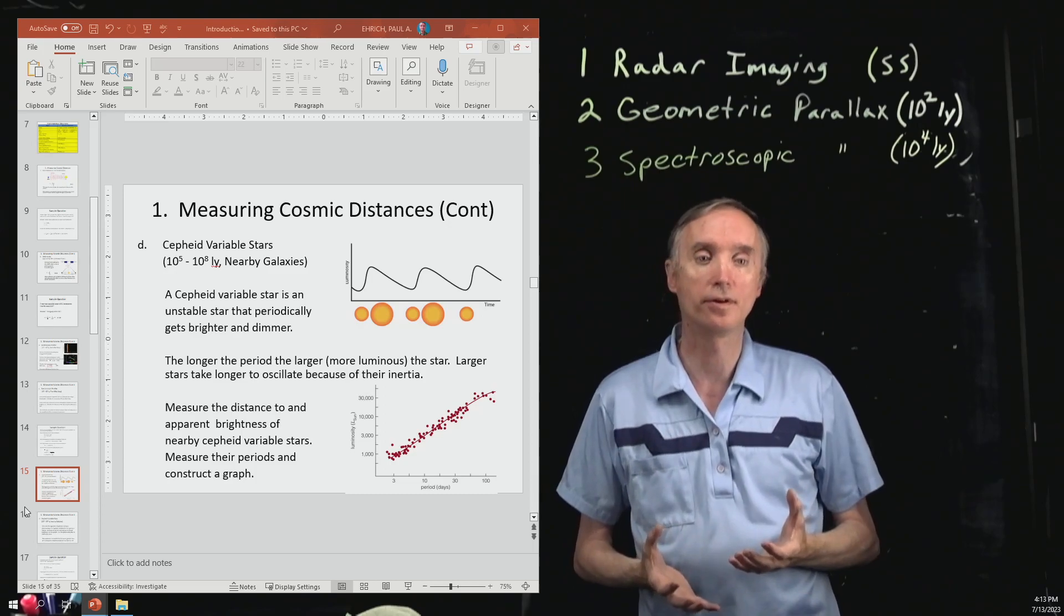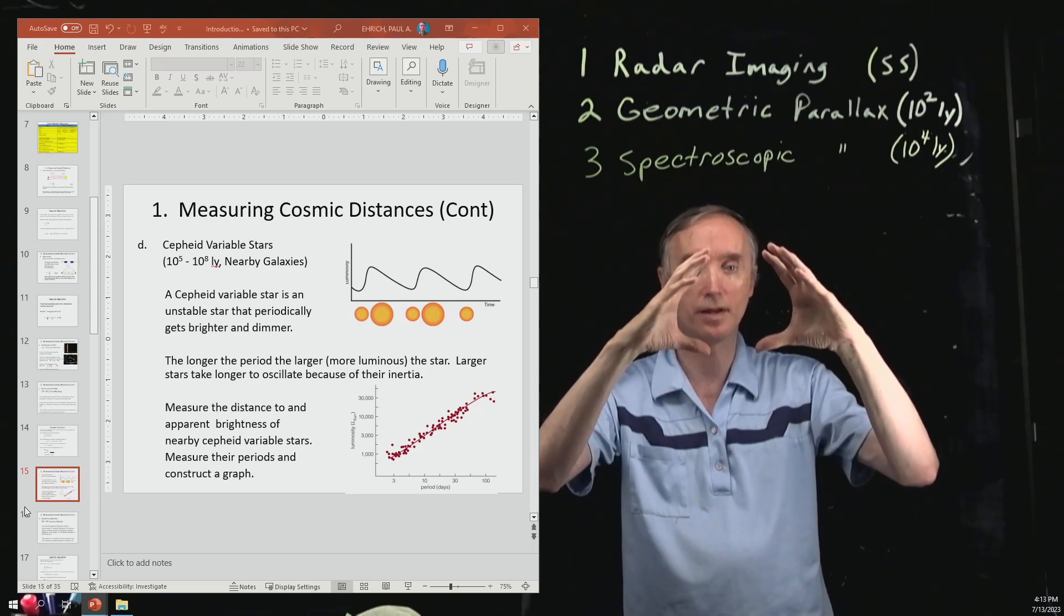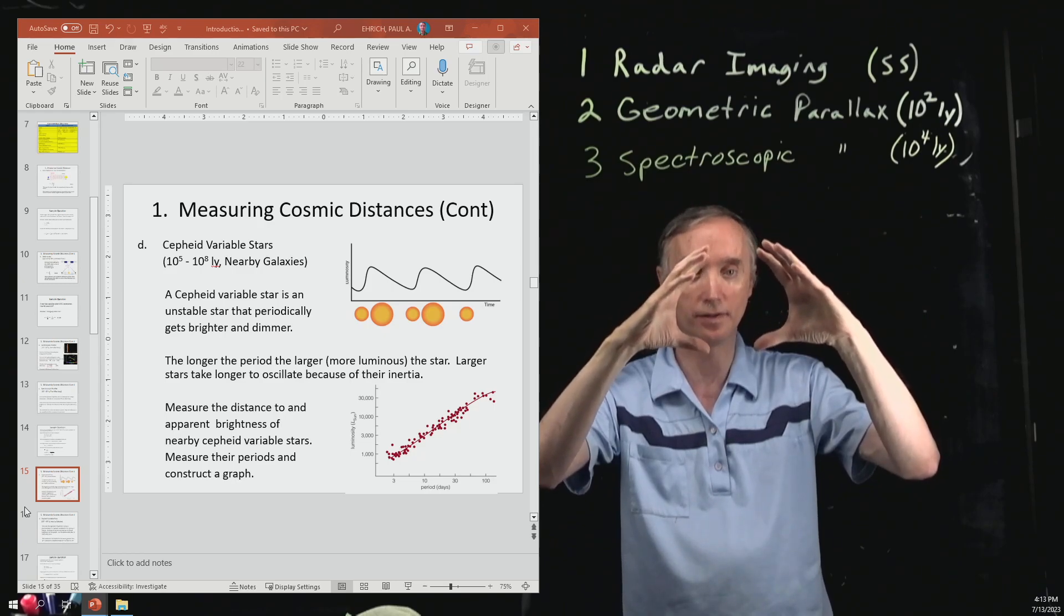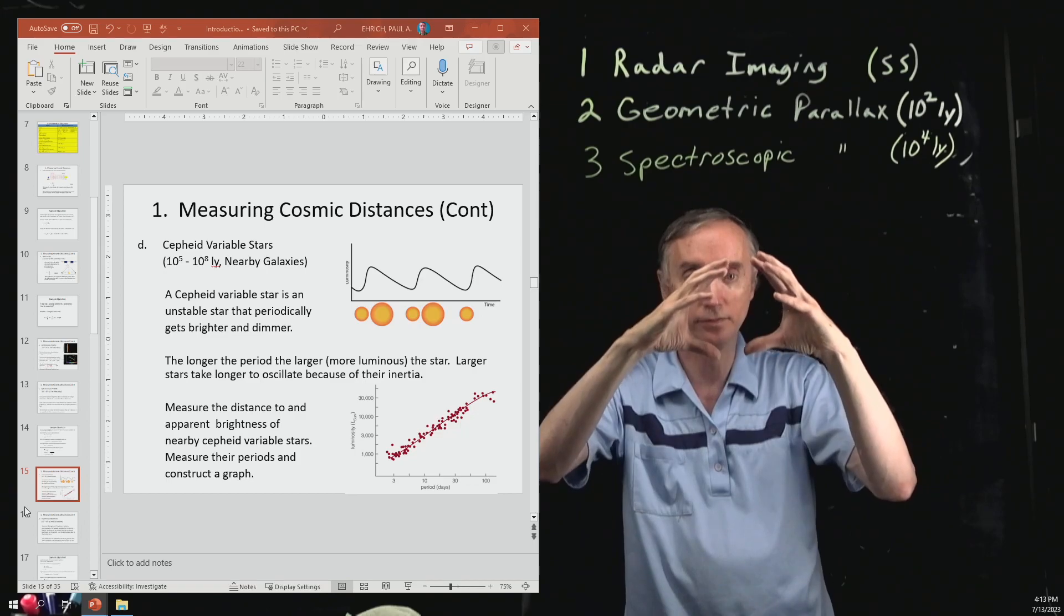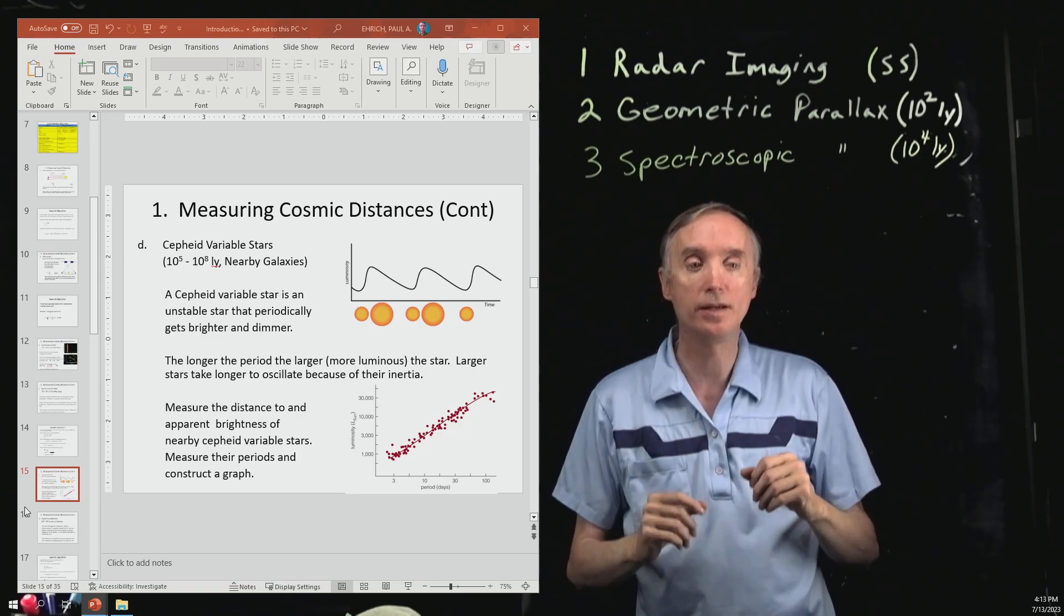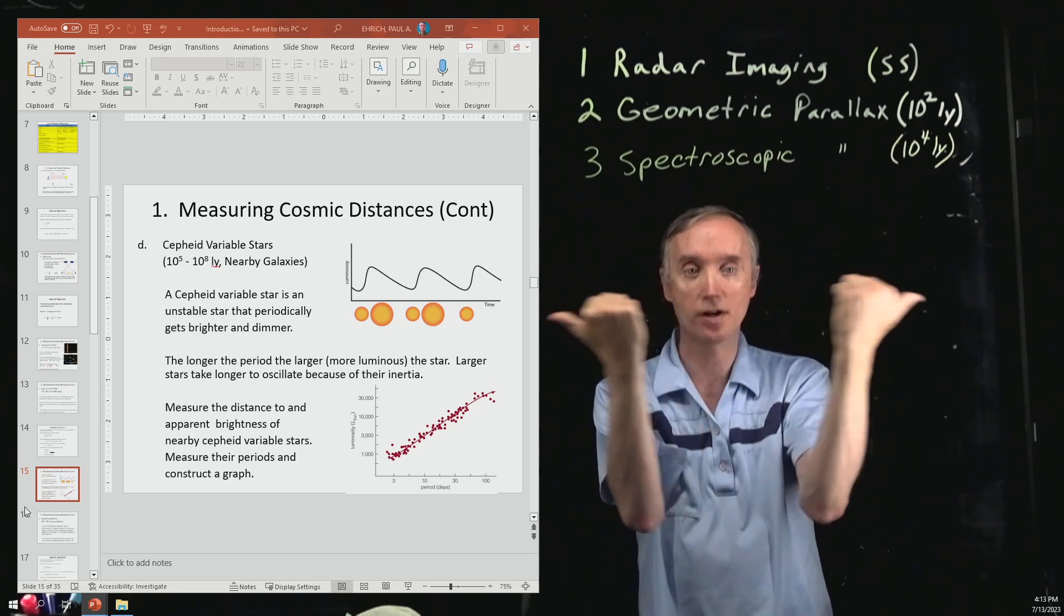In a normal star, normal stars basically have the same diameter and they always have the same brightness because gravity, which is trying to pull it in, is being exactly balanced by the nuclear explosions, which are trying to push it out.